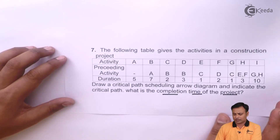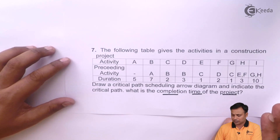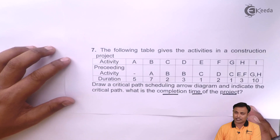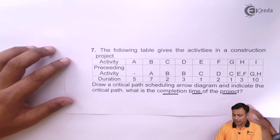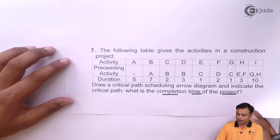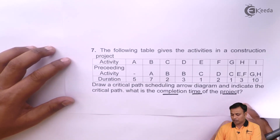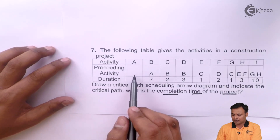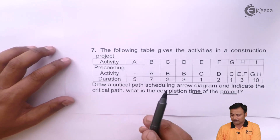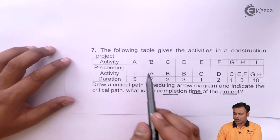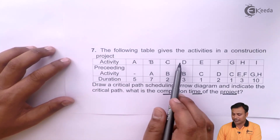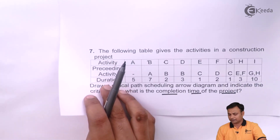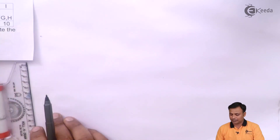First we will focus on drawing the network diagram or the scheduling arrow diagram, and then we will learn how to identify the critical path and how that helps to calculate the completion time of the project. Activity A has no preceding activity, so A is the initial activity. After A we have B, and after B we have C and D. Let's draw up to that point first.